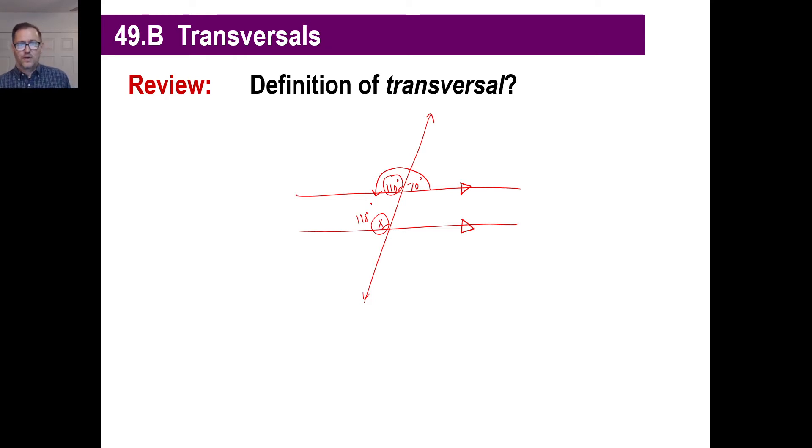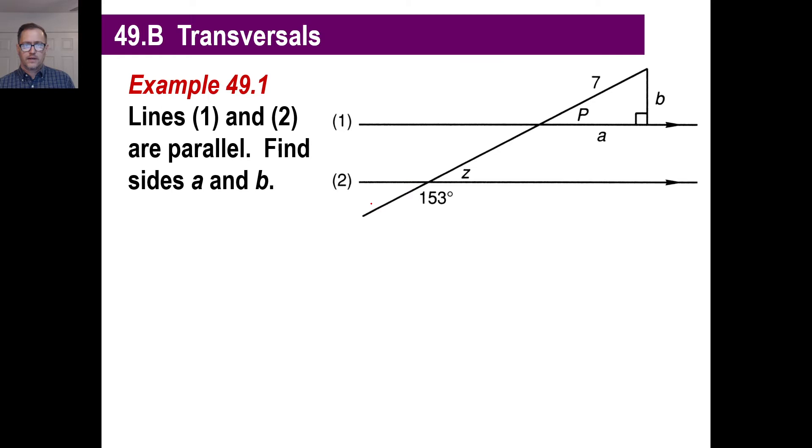Knowing that, we're going to mess with some trigonometry stuff. So, grab a calculator that has your trig functions and remember how to do those because we're going to use that to solve the next kind of problem here. This is the kind of problem. Lines 1 and 2 are parallel. So, here they are. There are the arrows. Find sides A and B.